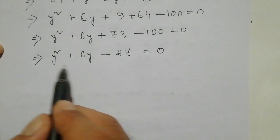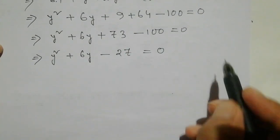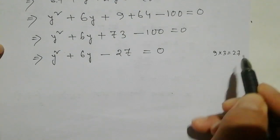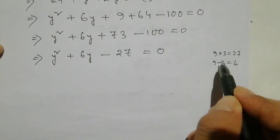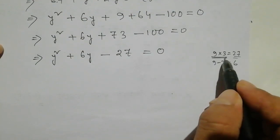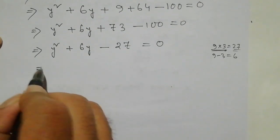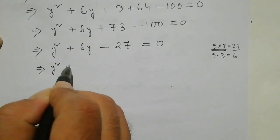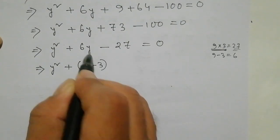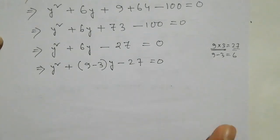So I am going to factor this: 27 means 9 times 3 equals 27. And I am going to make 9 minus 3 equals 6. So Y squared plus 6 is 9 minus 3. 9 minus 3 is 6. And Y is Y minus 27 equals 0.